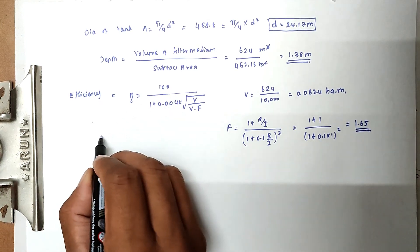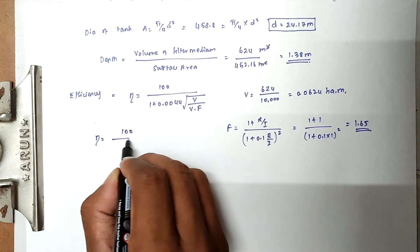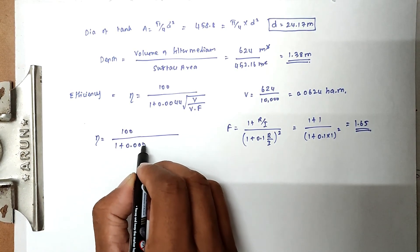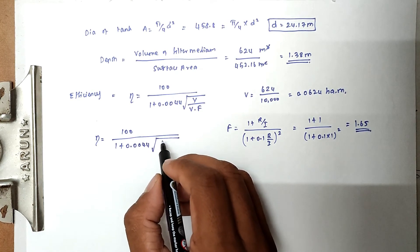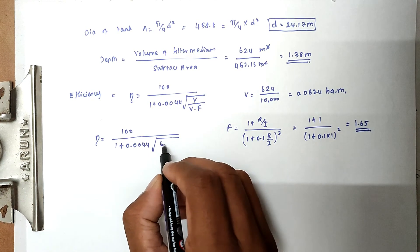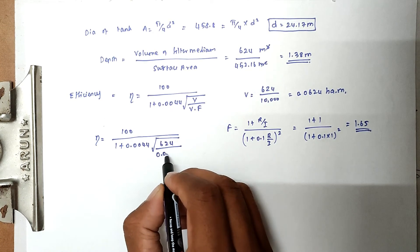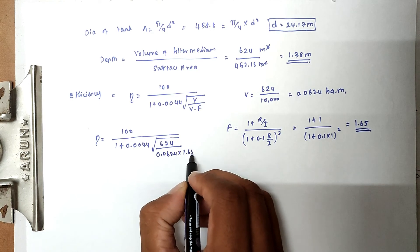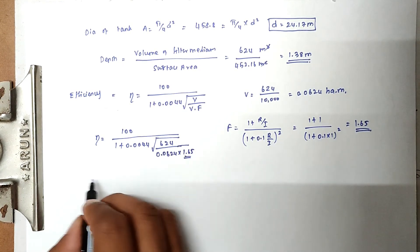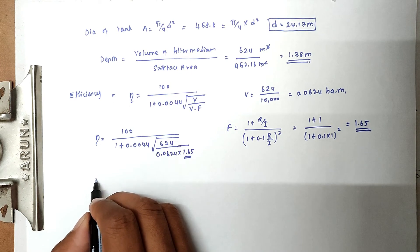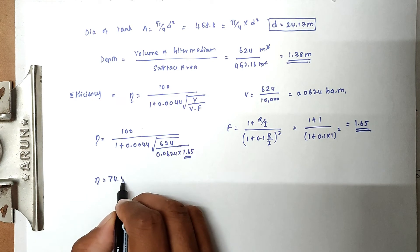Substituting all values: η = 100 / (1 + 0.0044 × √(624 / (0.0624 × 1.65))). Solving this gives η = 74.5%. So the efficiency of the trickling filter is 74.5%.